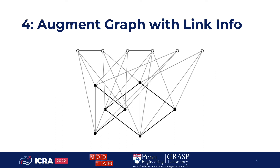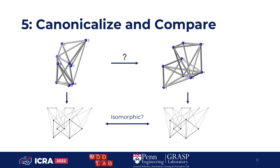If you do this procedure for two different robot configurations, and the resulting graphs are isomorphic, then it's likely that there's a collision-free path between them. If the results are not isomorphic, there is certainly no path. Typically, we put the graph into a canonical form to make it easier to compare.